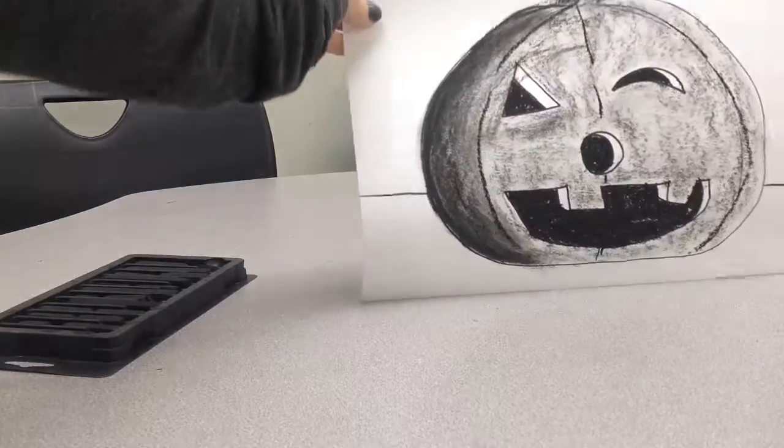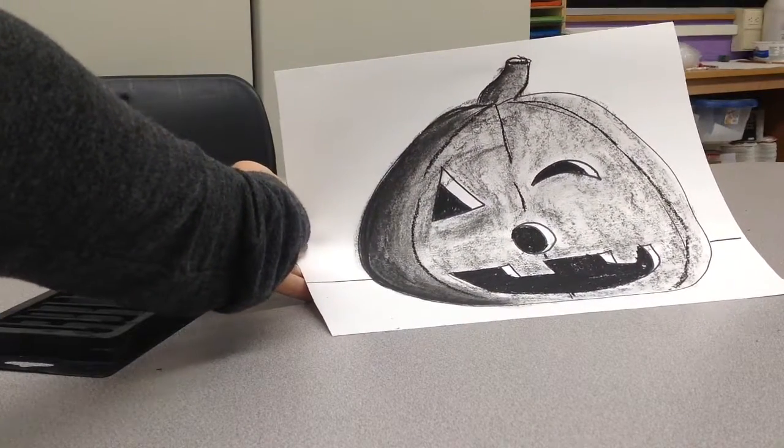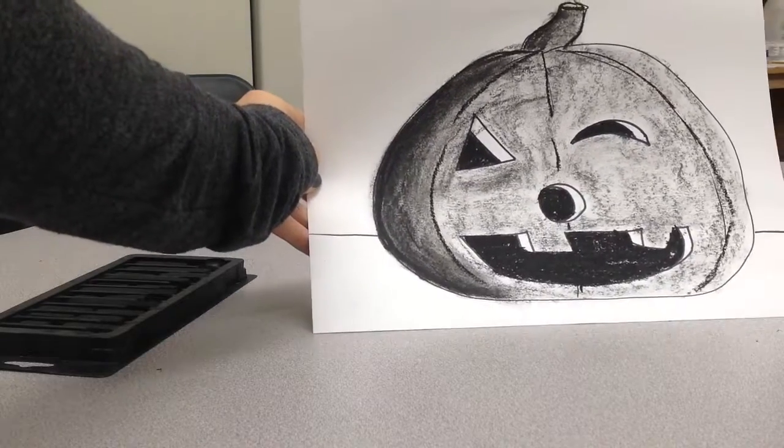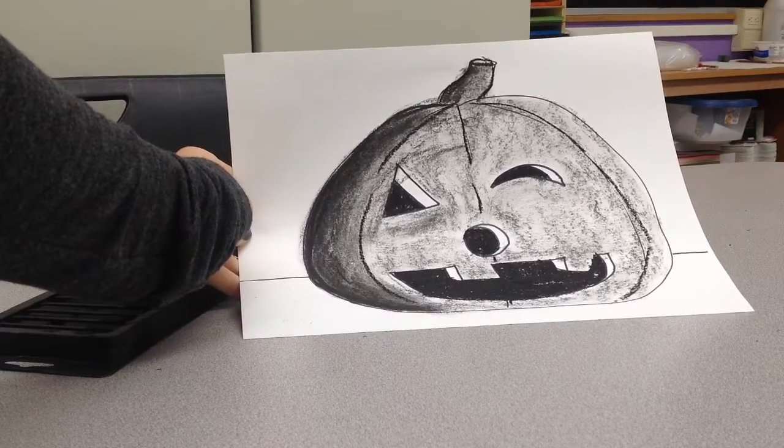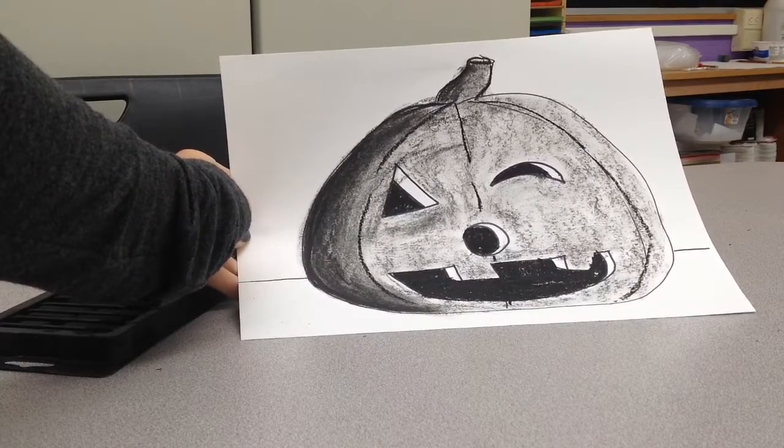Now that we have the left side shaded of our stem and our pumpkin, we're going to go ahead and choose our colors, our values for the background and the foreground. So that just means that we have to decide how dark or how light the ground is going to be, and the background behind the pumpkin.